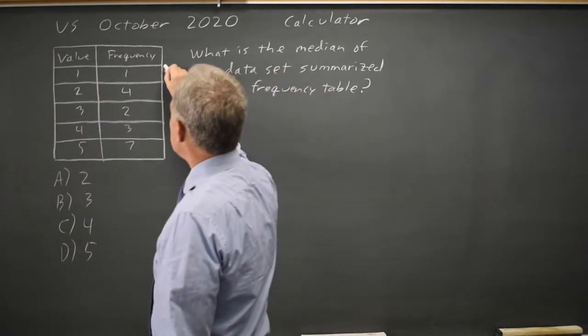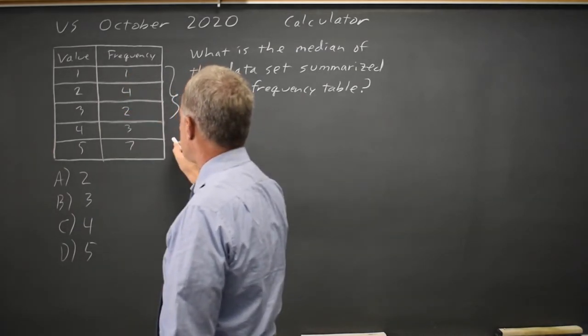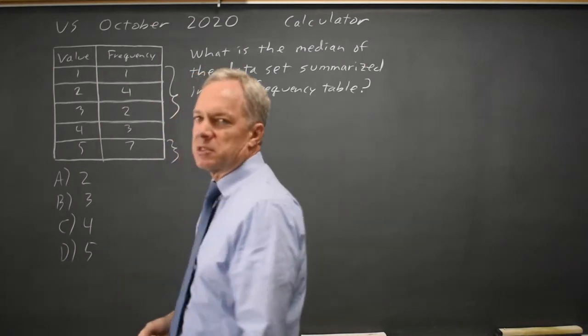One, two, and three all together appear one plus four is five, plus two, seven times. And five also appears seven times.